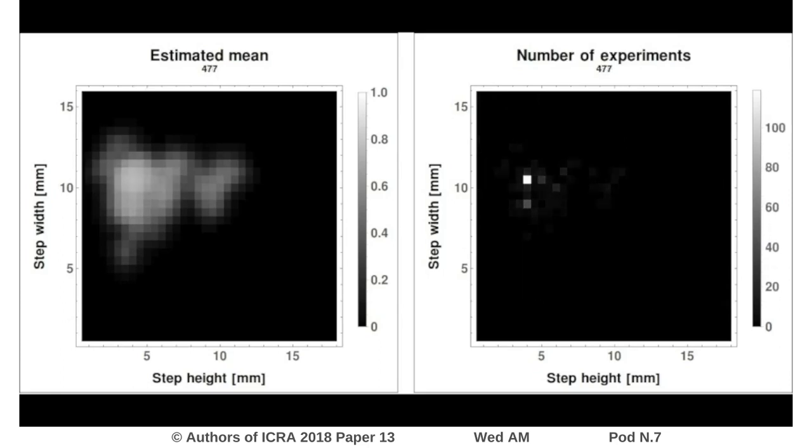Furthermore, the kernel density estimation approach is used to estimate the probability of success for neighboring parameter sets. This allows for a faster approximation of the solution space since it generalizes the outcome to the corresponding neighborhood region.